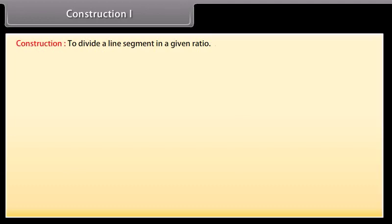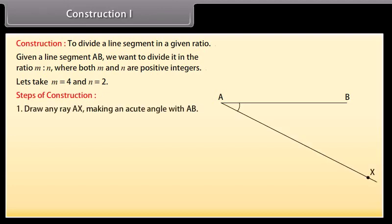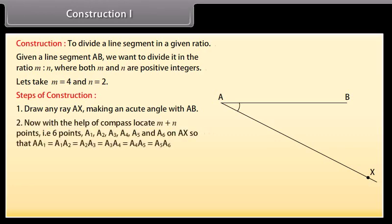To divide a line segment in a given ratio. Given a line segment AB, we want to divide it in the ratio M is to N, where both M and N are positive integers. Let's take M as 4 and N as 2. Draw any ray AX making an acute angle with AB. Now with the help of a compass, locate M plus N points, that is 6 points,